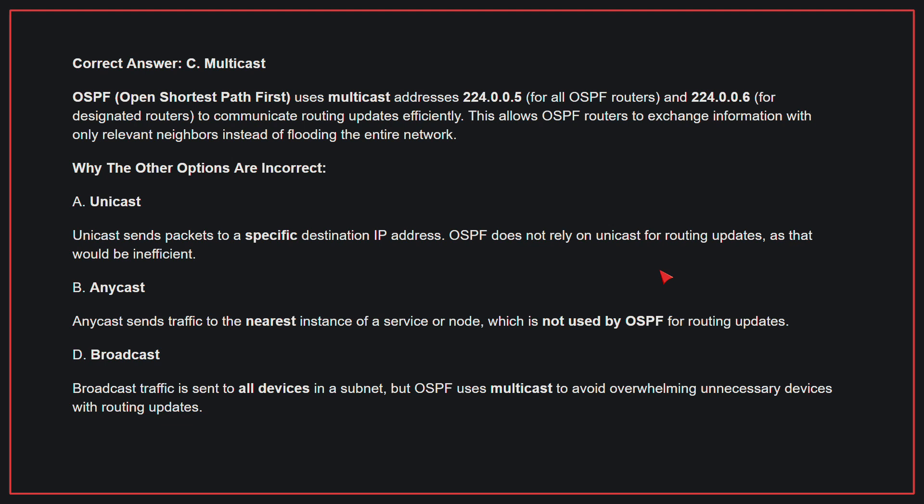Why the other options are incorrect: A, Unicast. Unicast sends packets to a specific destination IP address; OSPF does not rely on Unicast for routing updates as that would be inefficient. B, Anycast. Anycast sends traffic to the nearest instance of a service or node, which is not used by OSPF for routing updates. D, Broadcast. Broadcast traffic is sent to all devices in a subnet, but OSPF uses multicast to avoid overwhelming unnecessary devices with routing updates.